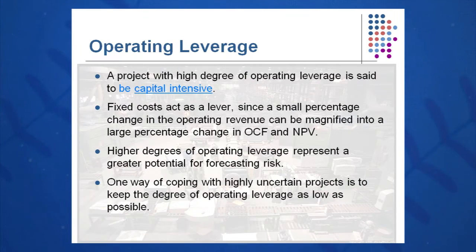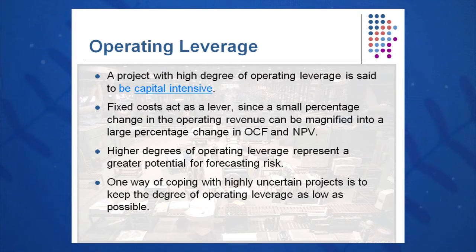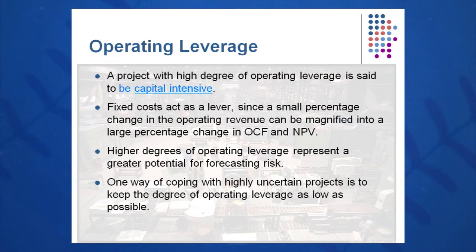If we are capital intensive — let's say a chemical plant, for instance, with lots of metal, machinery, and equipment — we're going to have a high degree of operating leverage and a high degree of fixed cost. Fixed costs act as a lever, so they can magnify gains and losses, turning a small percentage change in sales into a large percentage change in OCF and NPV. A company with high DOL is one that has lots of capital equipment.